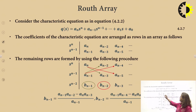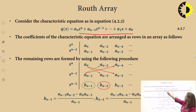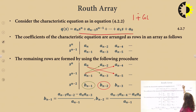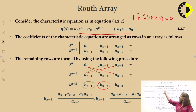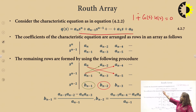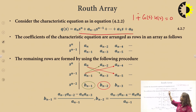Consider the characteristic equation: aₙsⁿ + aₙ₋₁sⁿ⁻¹ + ... + a₀. This is the characteristic equation, i.e., 1 + G(s)H(s) = 0, where G is the forward path transfer function and H is the feedback transfer function. To form the Routh array, we write the s^n row and the s^(n−1) row by taking alternate coefficients. For s^n: aₙ, aₙ₋₂, aₙ₋₄, ... up to a₀. For s^(n−1): aₙ₋₁, aₙ₋₃, ... up to a₁.